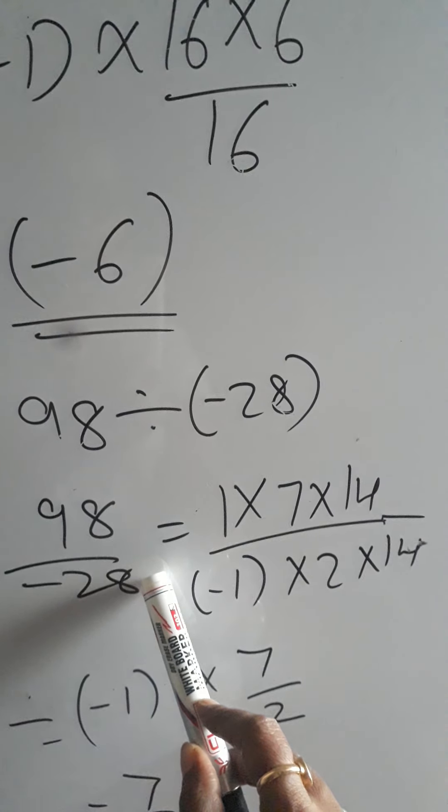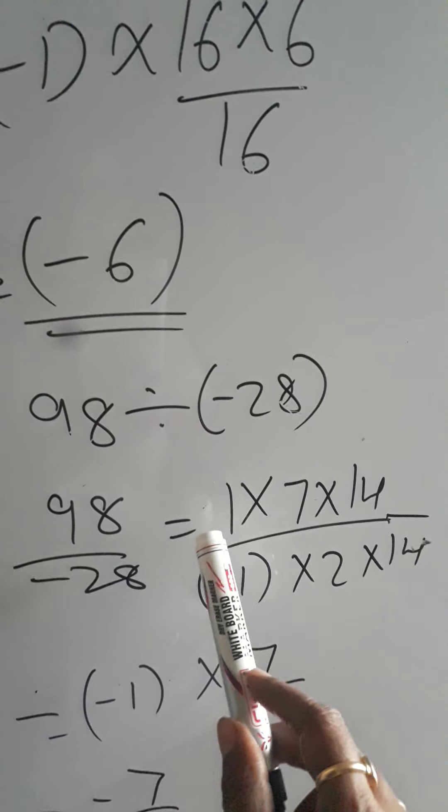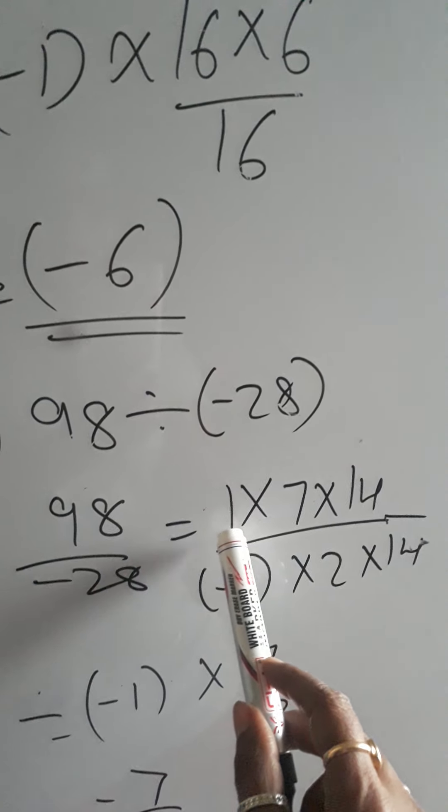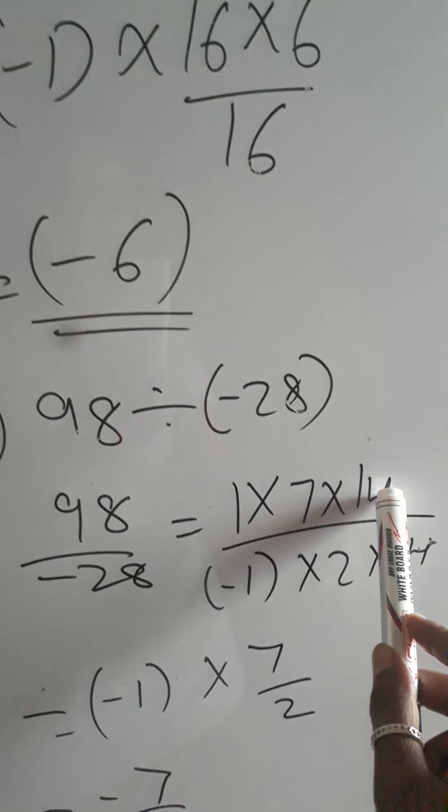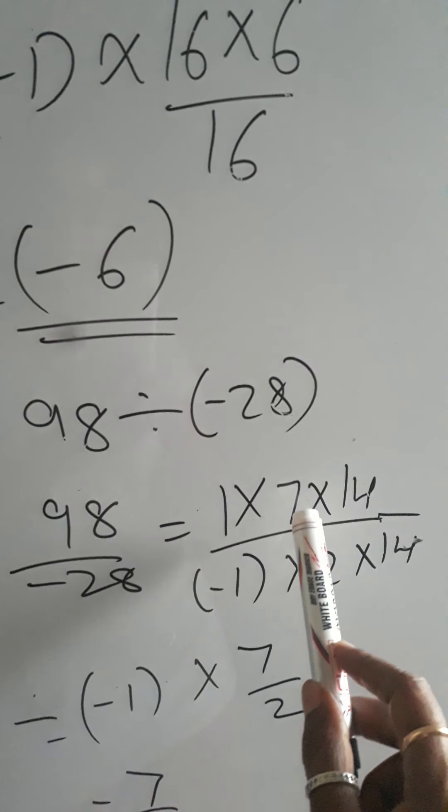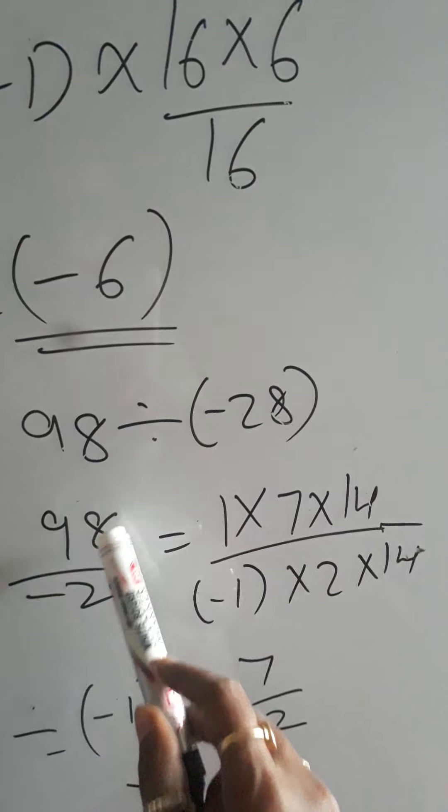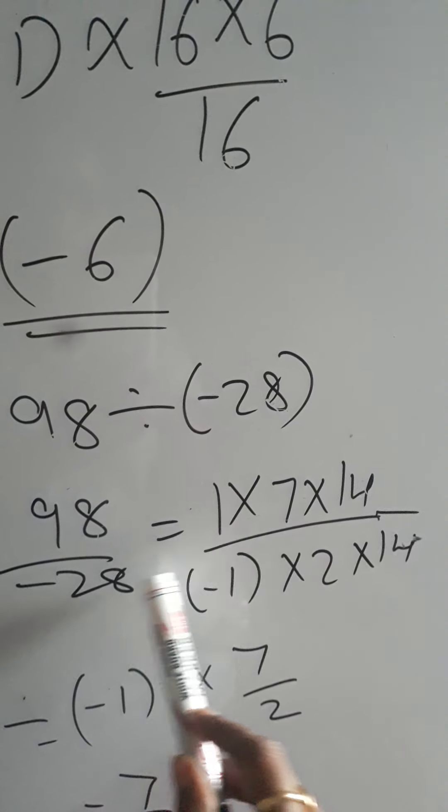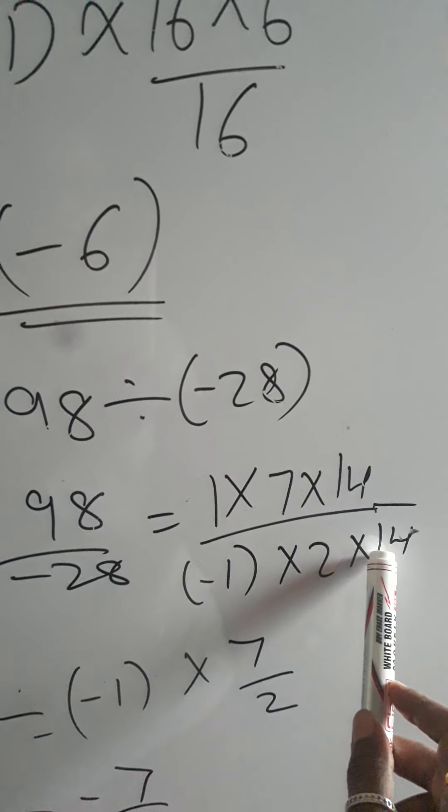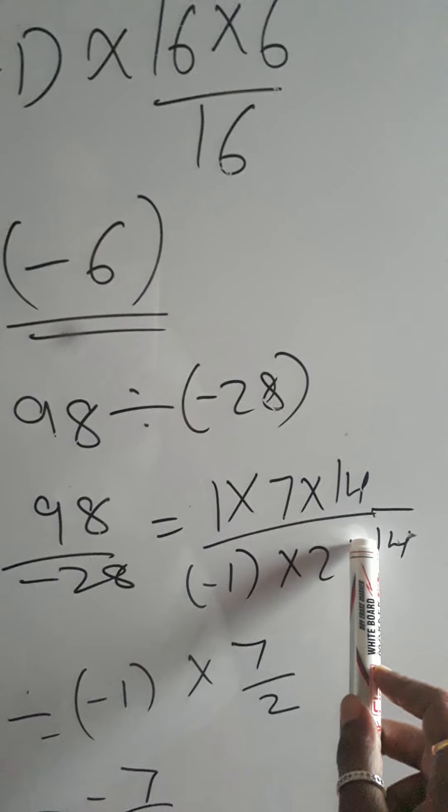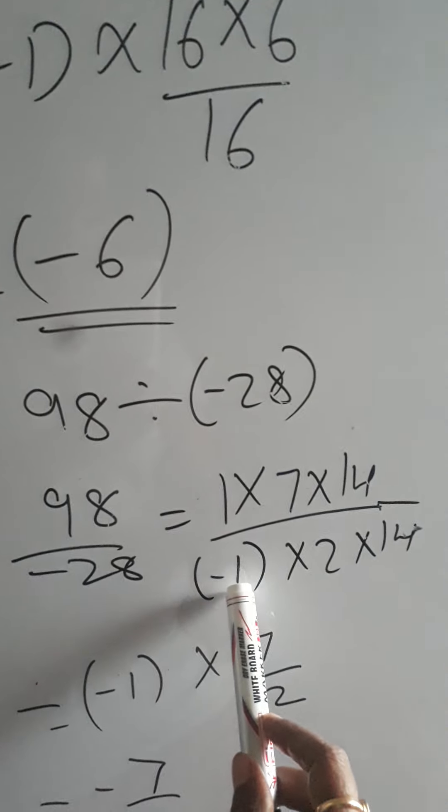In this form, how do we write? We split it up: 1 into 7 into 14, simply 7 into 14 gives me 98, and 28 can be split into 2 into 14. 14 2s are 28, and the minus sign with minus 1.